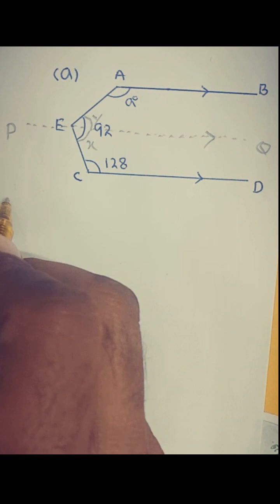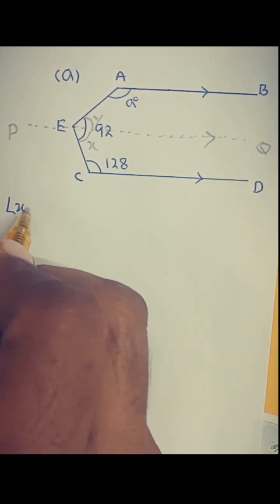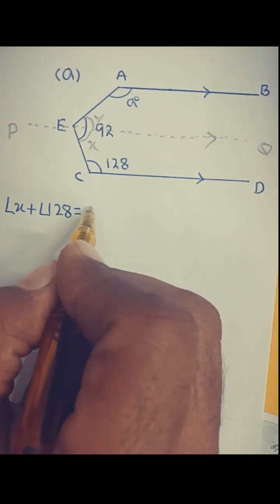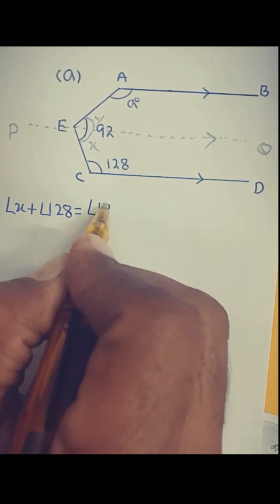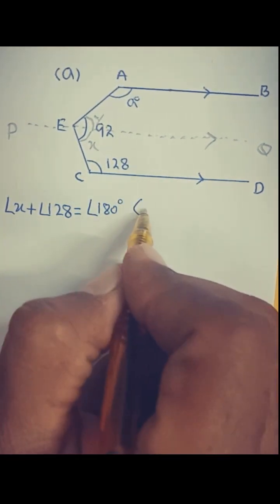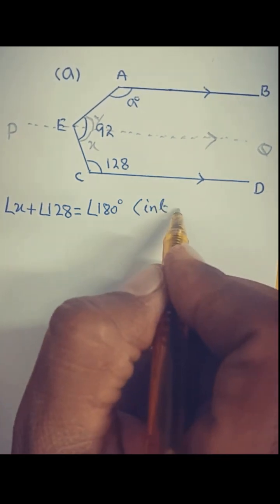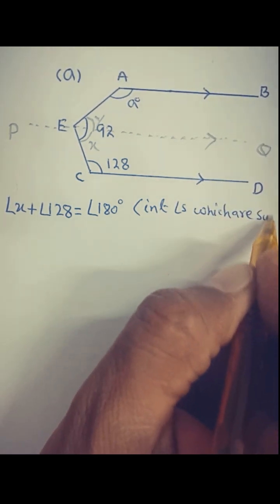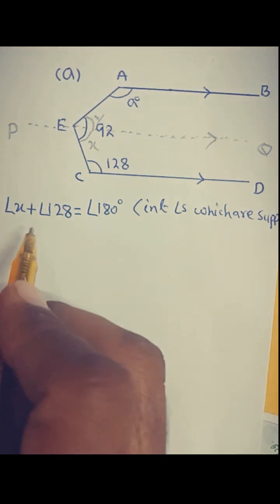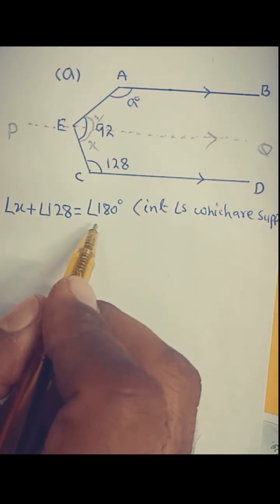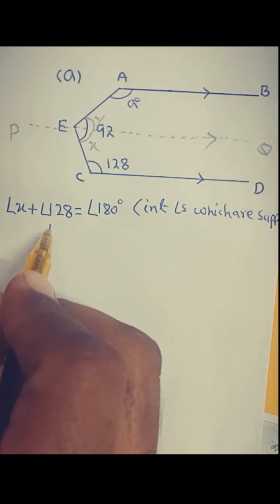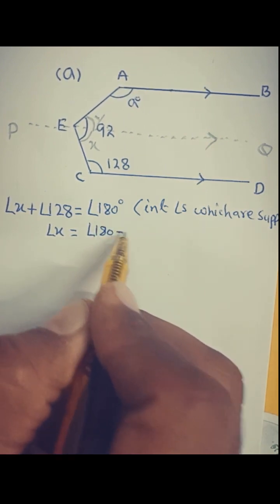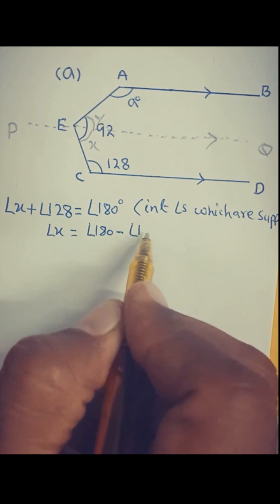First we find angle X, which is an interior angle supplementary with angle 128. So angle X plus angle 128 is equal to 180 degrees because these are interior angles which are supplementary. When we move 128 to the other side of the equal sign, angle X will be equal to 180 minus 128.